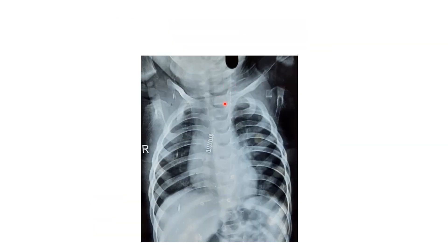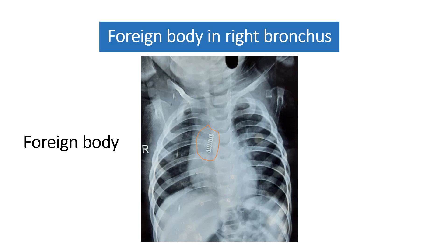In this x-ray, when you trace the trachea, you can see a foreign body present in the right bronchus. The diagnosis for this x-ray is foreign body in the right bronchus.